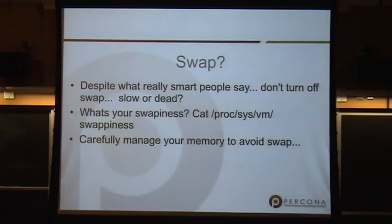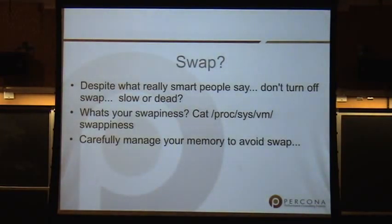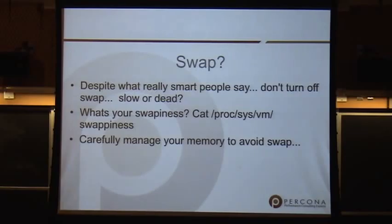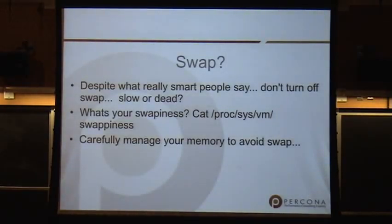Swappiness — how many people have heard of swappiness on Linux? The Linux kernel will actually swap out user or process space to preserve memory for the file system cache. If swappiness is set to 60, which is the default, it means reserve some amount of space for file system cache. So you can swap MySQL out to preserve space for file system cache, which in most cases you don't want. We recommend generally setting swappiness to zero.